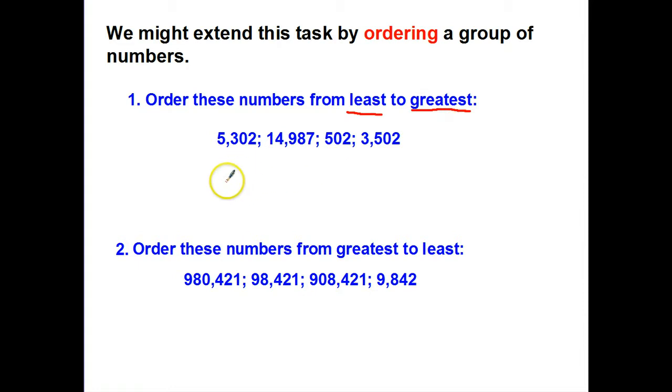Well, 502 only has three digits, where the others have at least four. So we know that's going to be the least. And 14,987 is obviously larger than the others, because it has five digits, where the others only have four. So that one will certainly be my largest.